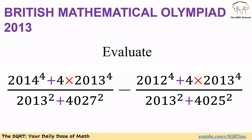We have 2014 to the power of 4 plus 4 times 2013 to the power of 4, over 2013 to the power of 2 plus 4027 to the power of 2. This is the first term. For the second term we have 2012 to the power of 4 plus 4 times 2013 to the power of 4, over 2013 to the power of 2 plus 4025 to the power of 2. We need to evaluate these two terms and subtract the second from the first to find the final answer.